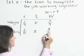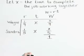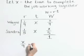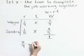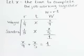Now, they're going to work together and complete one whole job. So the amount of work done by Wayne, X over nine, plus the amount of work done by Sandra, X over five, is equal to one complete job. We've written our equation.